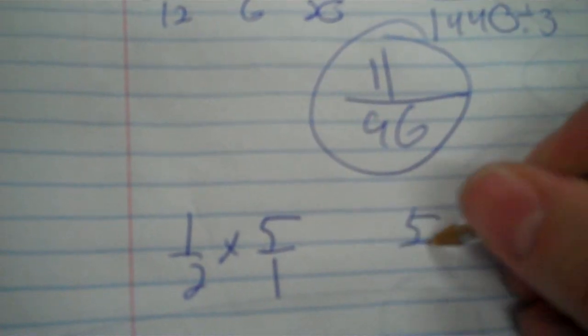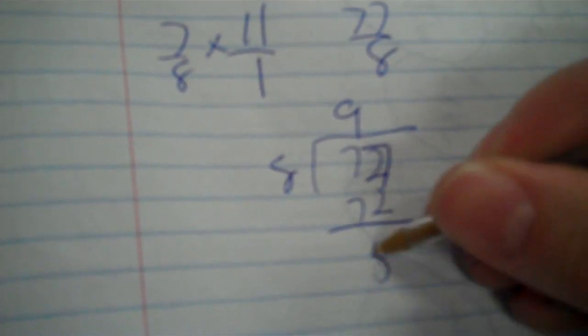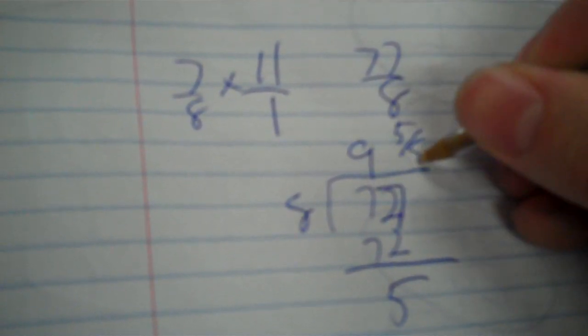That's multiplication. 1 half times 5. You could put that over 1. It'd be 5 over 2. But then, they're going to want it as a mixed number. 2 goes into 5 twice. Gives me a remainder of 1. So, 2 and a half. Again, calculator, it's fine. 7 eighths times 11 over 1. So, that's 77 over 8. 8 goes into 77 nine times. 8 times 9 is 72. So, we get a remainder of 5. So, 9 and 5 eighths.